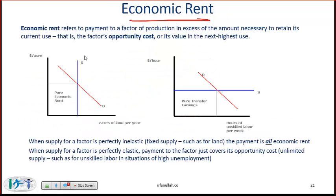Economic rent is another term you need to understand. Economic rent refers to payments to a factor of production in excess of the amount necessary to retain its current use — that is, the factor's opportunity cost. The factor's opportunity cost is the amount that needs to be paid to keep the factor employed. Any amount you pay above the opportunity cost is economic rent.